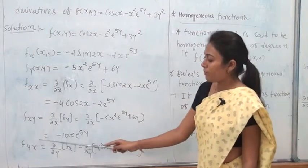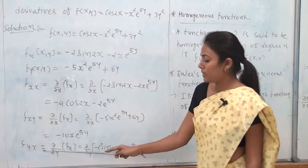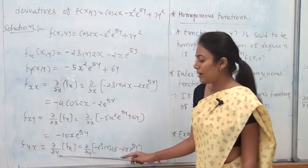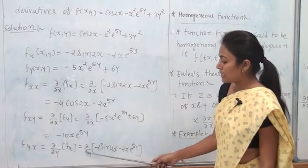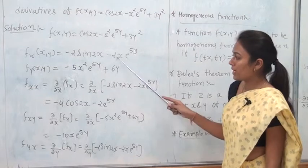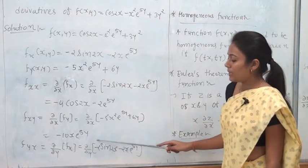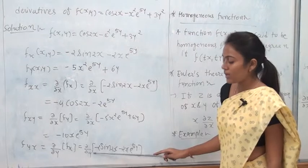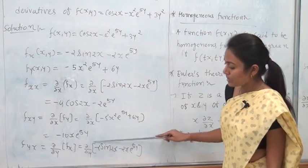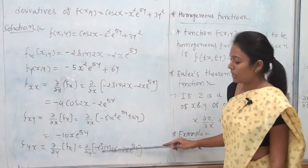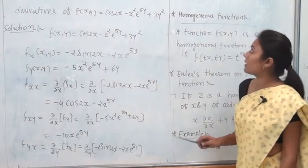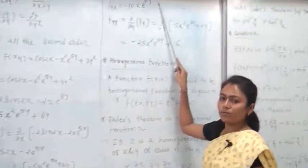For f_yx: differentiate f_x = −2 sin 2x − 2x·e^(5y) with respect to y. −2 sin 2x is a function of x only, so it becomes 0. Derivative of −2x·e^(5y) with respect to y gives −10x·e^(5y). Therefore f_yx = −10x·e^(5y).